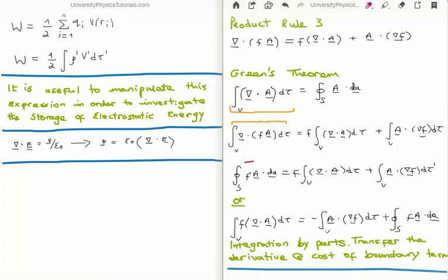So Green's theorem then allows us to replace the divergence of the scalar f multiplied by the vector a with the closed surface integral of the scalar f multiplied by the vector a dotted with the infinitesimal surface area element. Or rearranging it, we get the following expression down here on the bottom right of your screen.